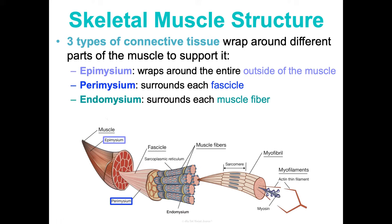ATP comes from breaking down carbohydrates like glucose during cellular respiration, delivered to the muscle cells via the blood in the artery nourishing the muscle. That's why muscle cells need lots of mitochondria and constant blood vessel supply of sugar to be broken down to get ATP.